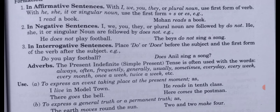In negative sentences: I, we, you, they, or plural nouns are followed by 'do not'. Do and does are the helping verbs in present indefinite — 'do' with plural, 'does' with singular subjects. He, she, it, or singular nouns are followed by 'does not'. Example: 'He does not play football.' 'The boys do not sing a song.'